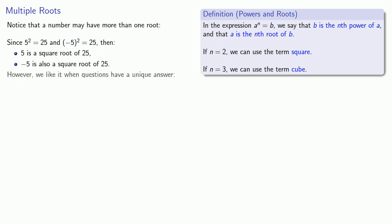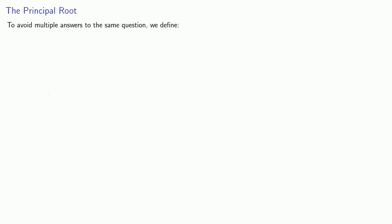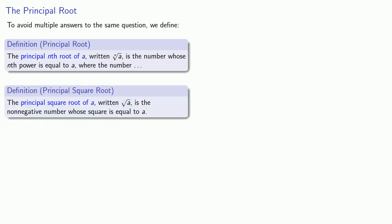This raises a new problem. We like it when questions have a unique answer — we don't like multiple answers. To avoid multiple answers to the same question, we define some notation. The principal nth root of a, written with the radical symbol, is the number whose nth power is equal to a, satisfying certain properties that depend on which root we're taking. The principal root we most commonly encounter is the principal square root. The principal square root of a, written with the radical symbol, is the non-negative number whose square is equal to a.